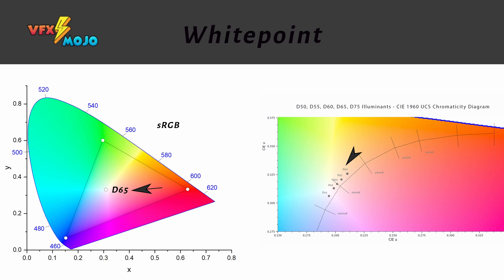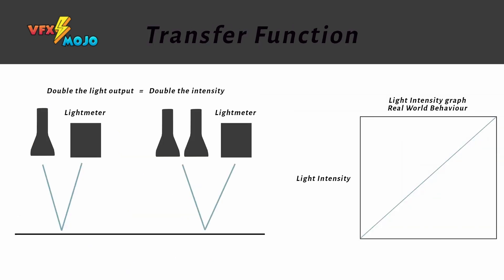The white point defines the point within the colors which is perceived as white or neutral. Your brain changes its perception of white depending on the viewing environment. Hence, we define several white points to compensate for this within a color space. Light is linear, but human eyes don't perceive luminance in a linear fashion.